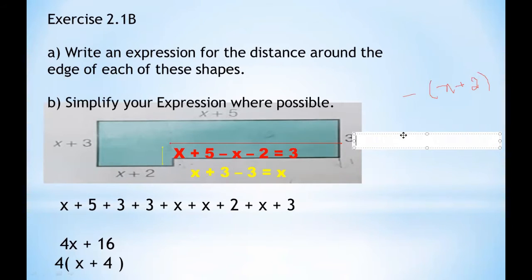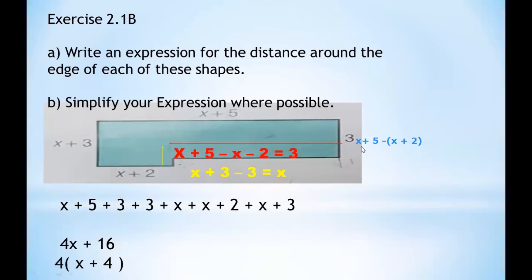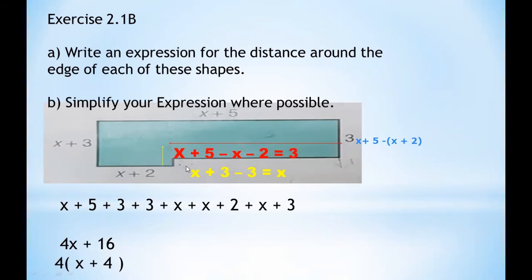When I subtract: (x+5) minus (x+2). Removing the bracket, minus into plus is minus and plus into minus is minus. So I get x+5 minus x minus 2. The x and x cancel, and 5 minus 2 is 3. So the length of this remaining side is 3.